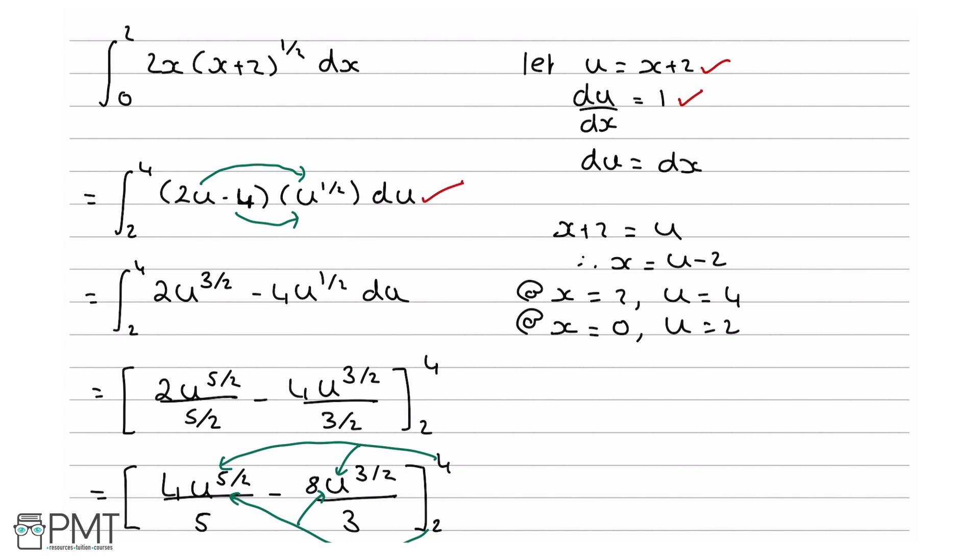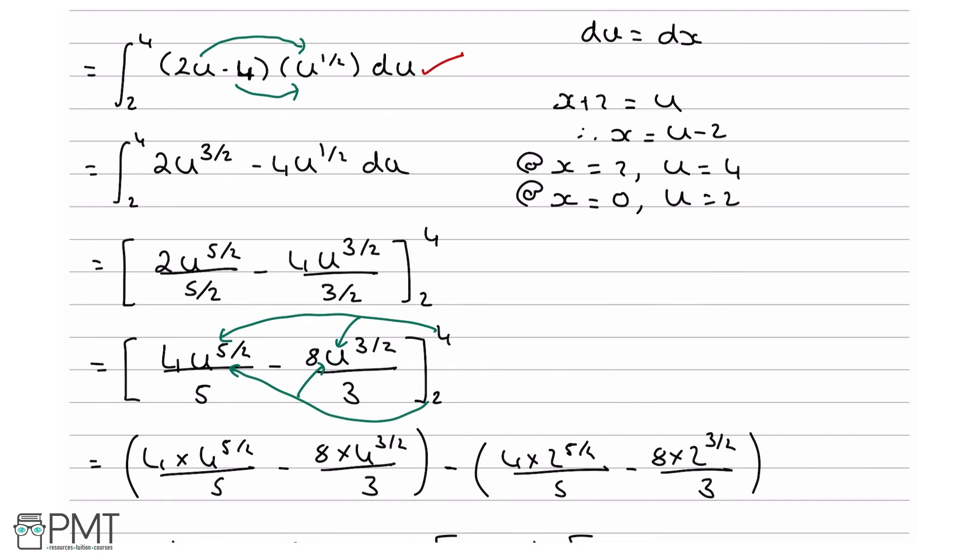Your fourth mark and fifth mark kind of come together in that you get your fourth mark if you've got anything times u to the 5 over 2 plus anything times u to the 3 over 2. But if you've gotten exactly 4 over 5 times u to the 5 over 2 minus 8 over 3 times u to the 3 over 2, as we have here in our solution on this line, you will get both of your marks. So we get two marks for this line.